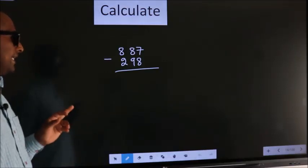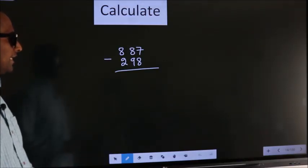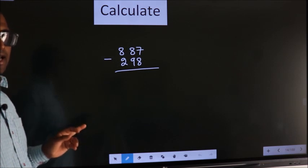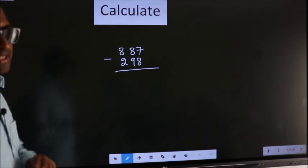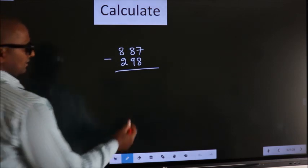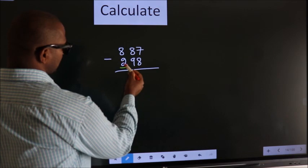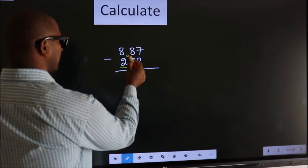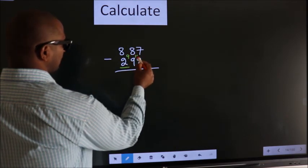Calculate 887 - 298. How do we calculate this faster? We should leave the first digit, and here you write 9, here you write 10.